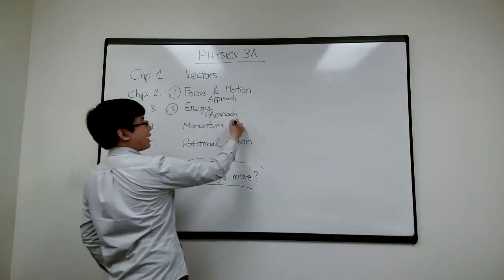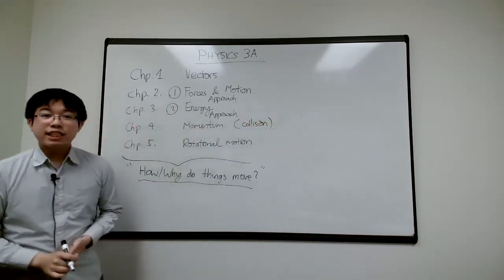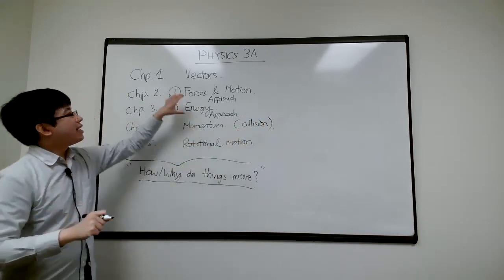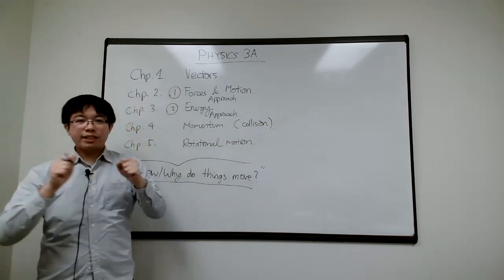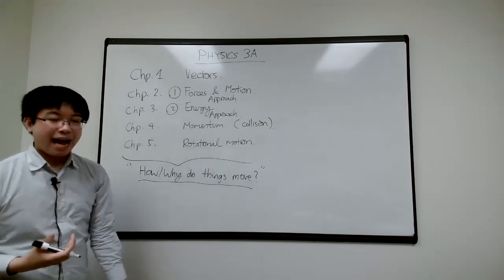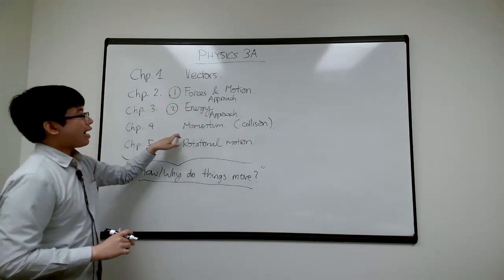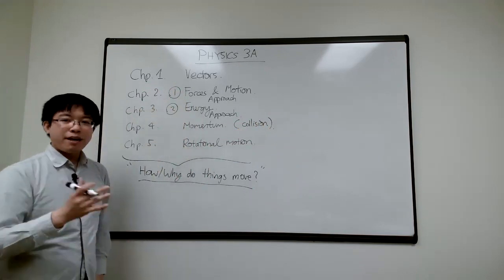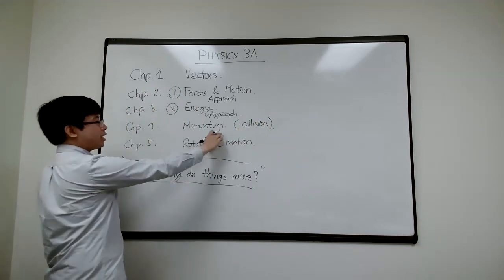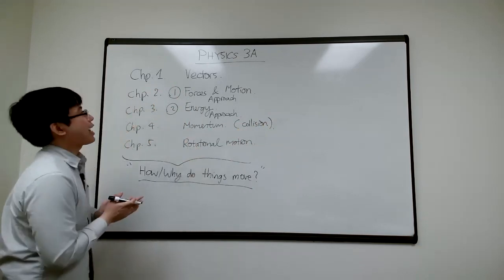Momentum is basically the theory of collisions — when things collide. In Chapters 2 and 3 we study the motion of one object, like how an apple falls or why the Earth goes around the Sun. Then in the momentum chapter we look at two objects interacting. And finally we'll talk about the theory of rotation. That's the big plan.